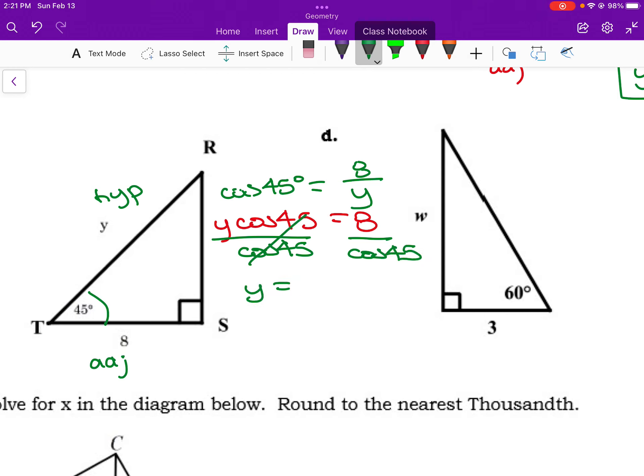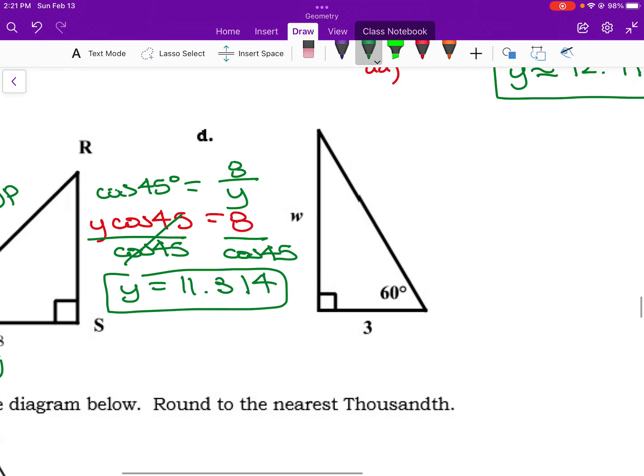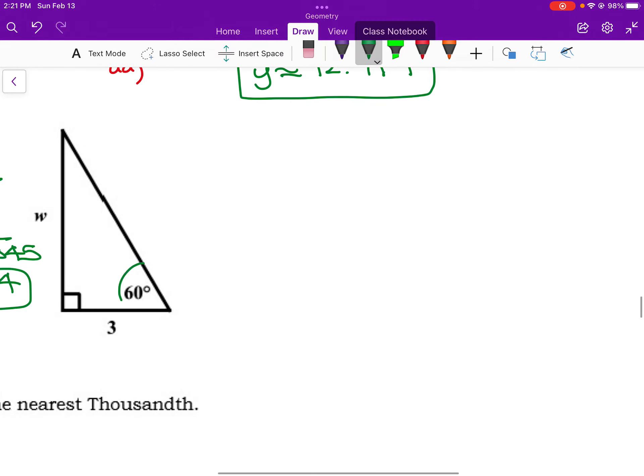So these cancel. So if I do 8 divided by cosine of 45, we get 11.314 if we round. Next one, 60 degrees here with respect to that guy, adjacent and opposite. Those are the elements of the tangent ratio. So tangent of 60 equals opposite, so w, over adjacent, which is 3.